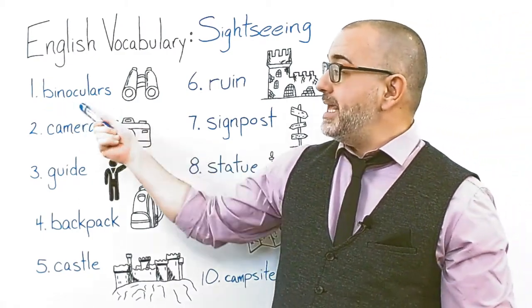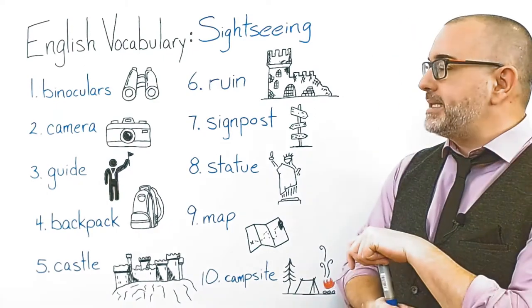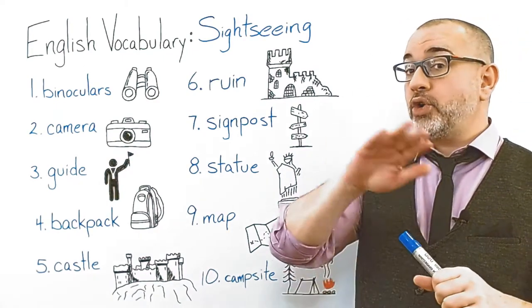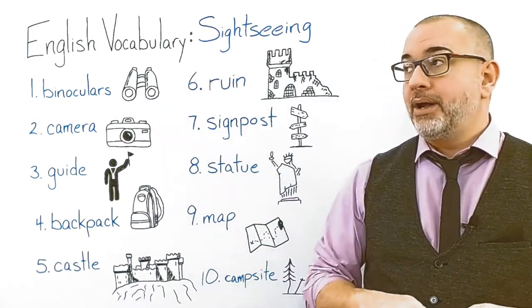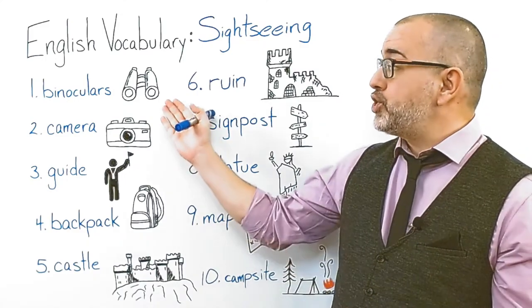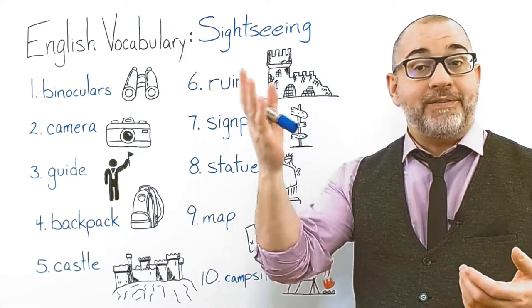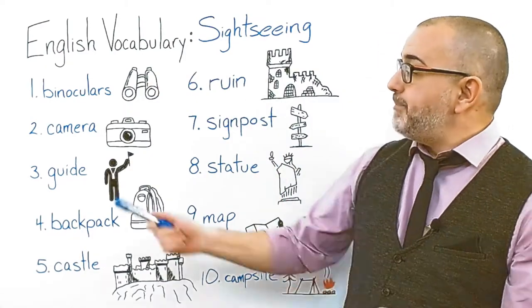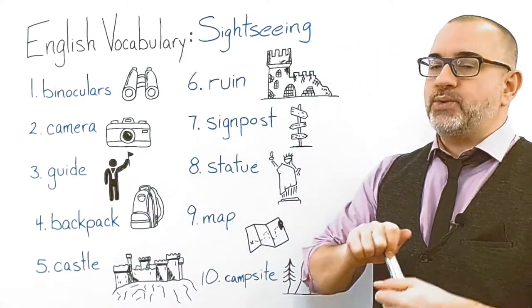Let's start with binoculars. He looked at the horizon through his binoculars. Or: her binoculars were very strong — she can see things very far away quite clearly. Okay, next word is camera. Let's make a sentence with camera.